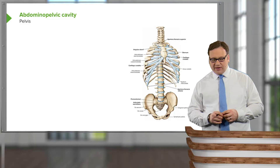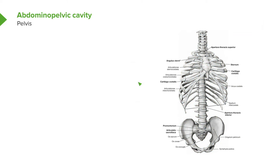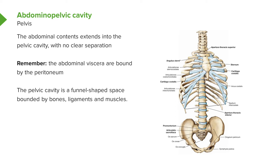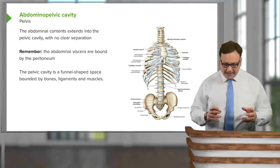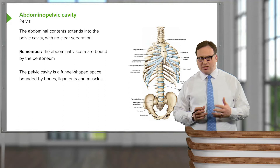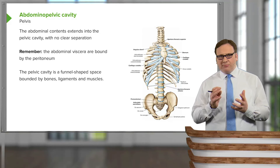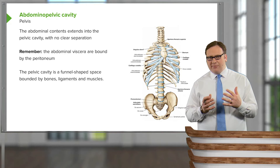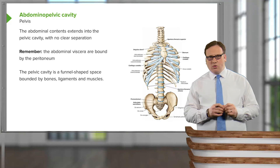Let's look at the abdominopelvic cavity, specifically the pelvis. Previously we saw the posterior abdominal wall filling this space, but now we're concentrating purely on this region — the pelvis, or innominate bone. Remember that the abdominal contents extend into the pelvic cavity. Unlike the thorax and abdomen, which are separated by the diaphragm, there's no clear separation. The abdominal viscera are bound by the peritoneum, but that doesn't happen in the pelvis — the peritoneum drapes on top of the pelvic organs.